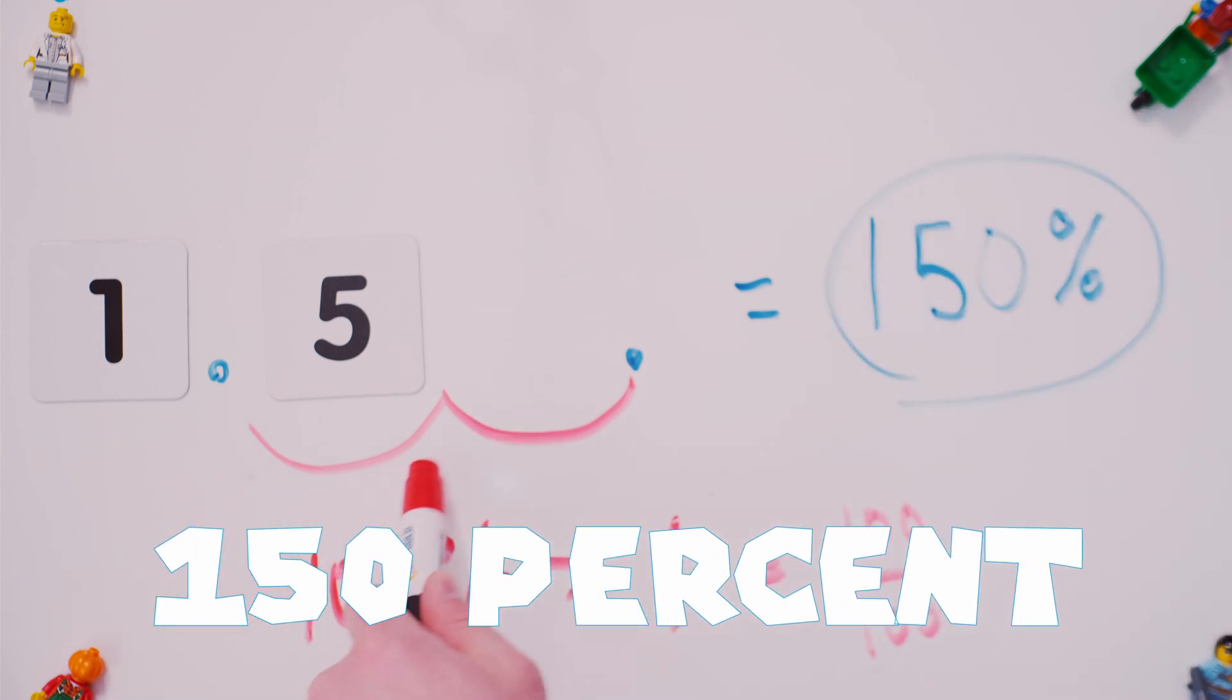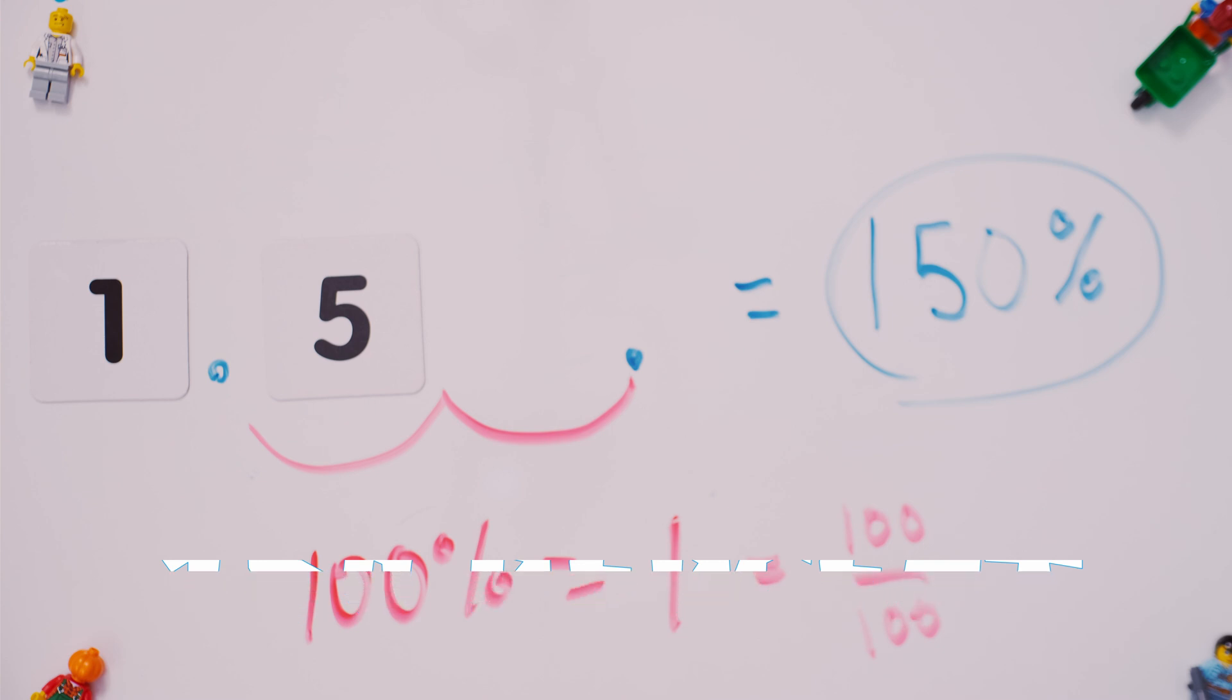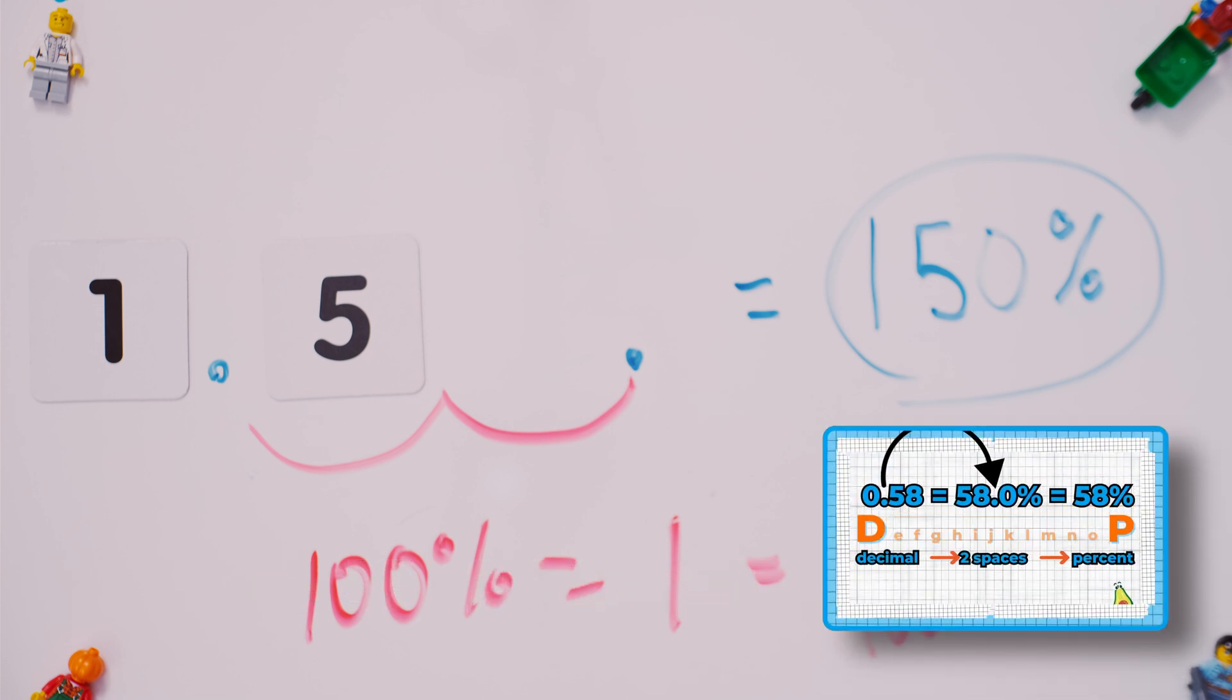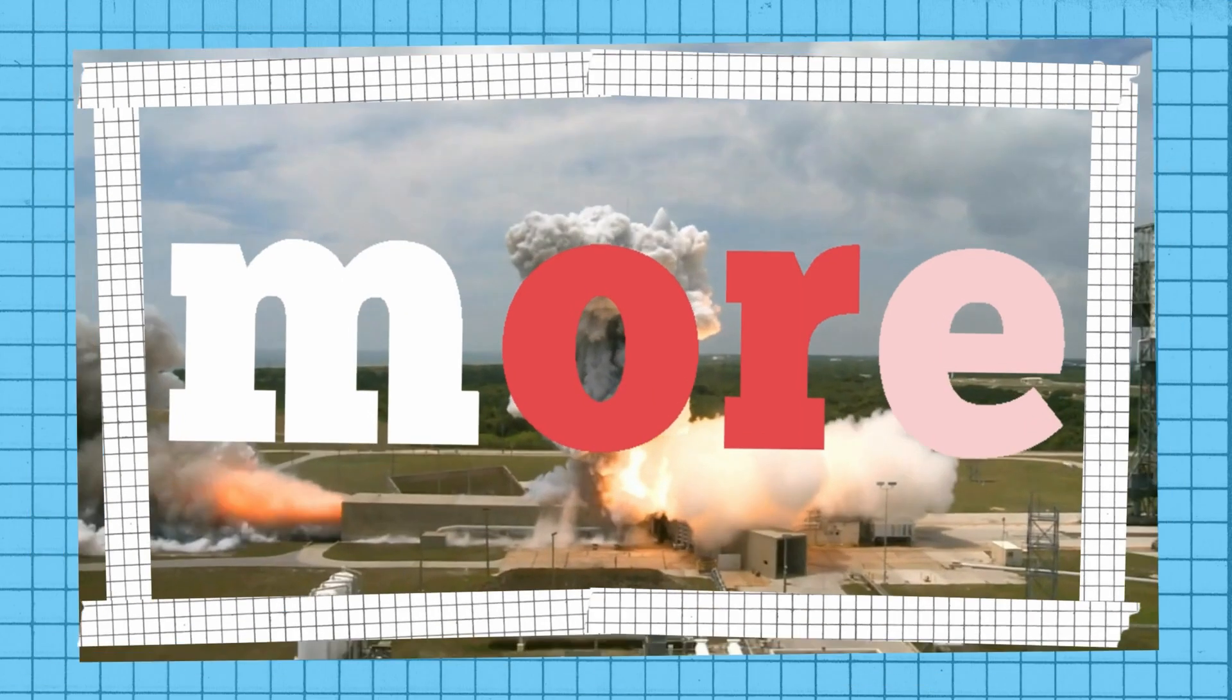150%. Move the decimal over two spaces to the right because P comes after D on the alphabet.